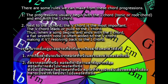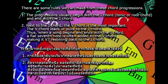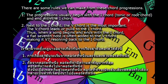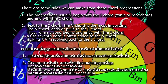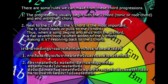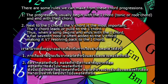There are some rules we can draw from these chord progressions. Rule 1: progressions usually begin with the first chord — the tonic or root chord — and end with the first chord. Rule 2: next to the first chord, the fifth chord is the most important; the fifth chord leads or pulls to the first chord.